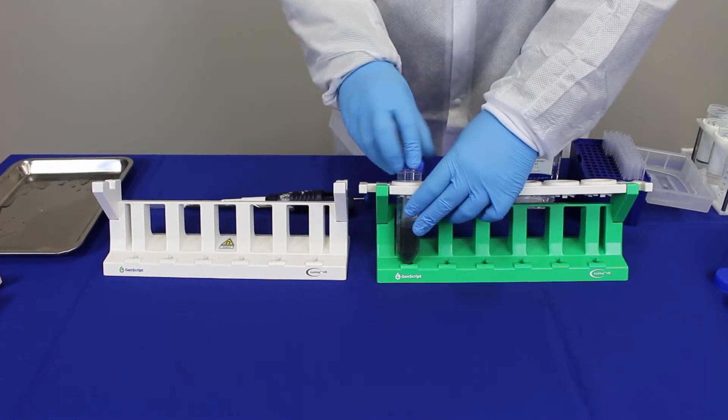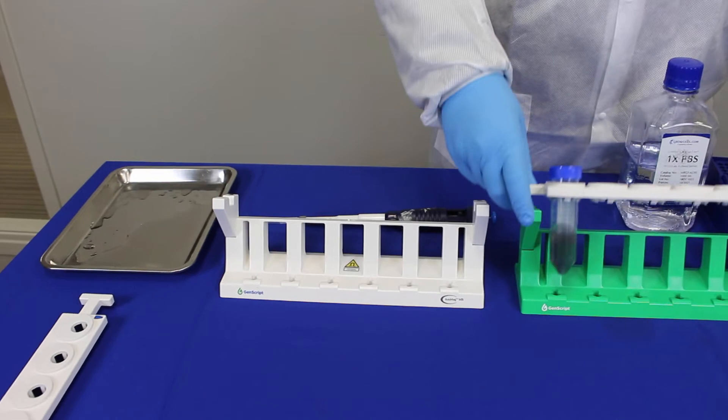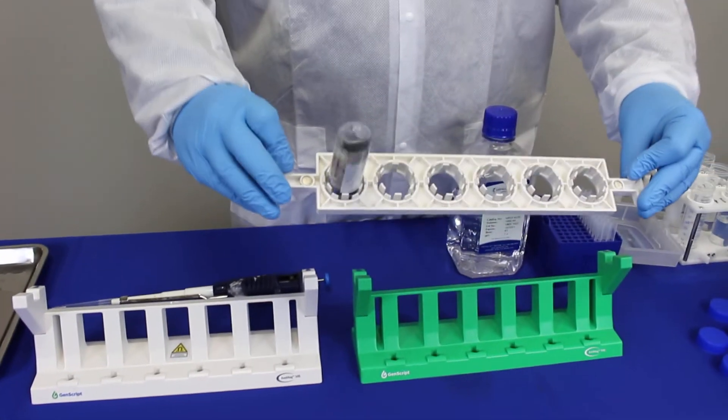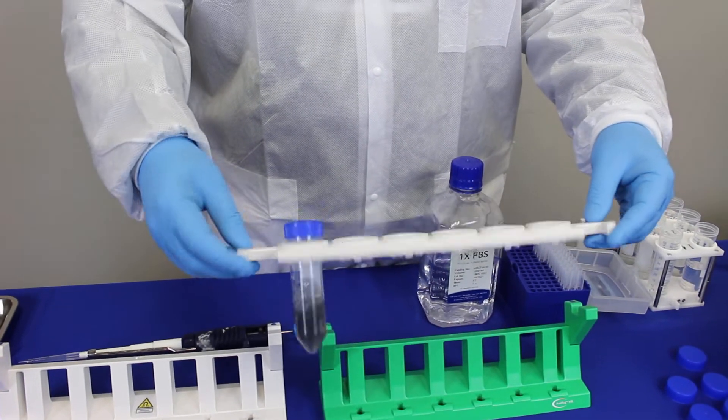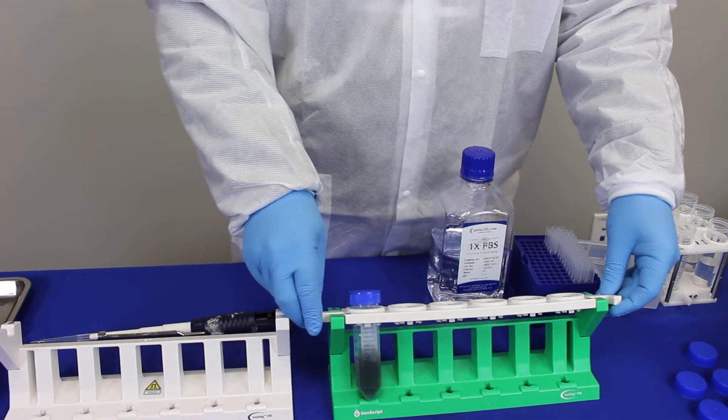You just cap the tube, lift this part of the rack, and then shake it to make sure that all the beads are resuspended, and so that the ethanol is mixed with the PBS.